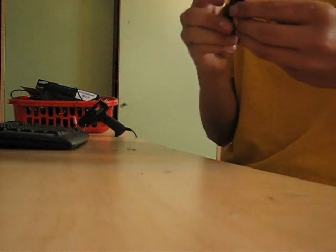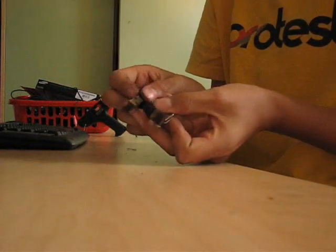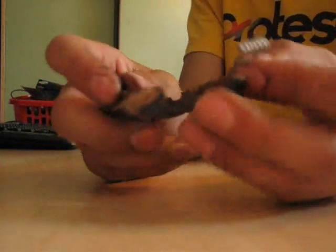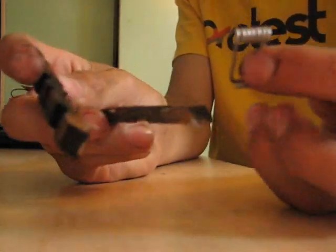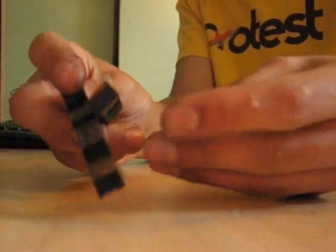The first step is to take the clothespin apart. It's not too difficult. Just keep all the parts.